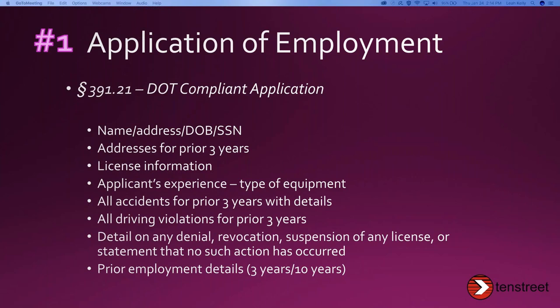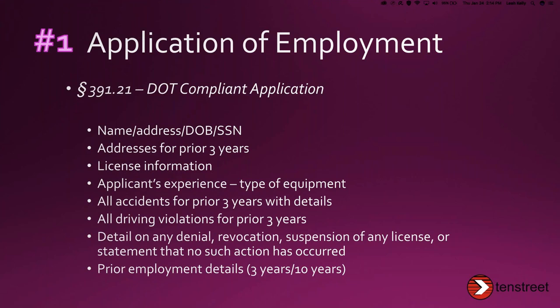At a broad level, the application needs to have the name, address, date of birth, and social security number of the applicant; the addresses where they've lived for the prior three years; license information; the applicant's experience; any accidents for the prior three years with details; all driving violations for the prior three years; and if there's ever been a denial, revocation, or suspension of any license, the detail on that — or a statement that no such action has occurred. And then prior employment details: you must have the past three years for any prior employment, and if they have had previous driving experience, you need the past 10 years of driving experience.